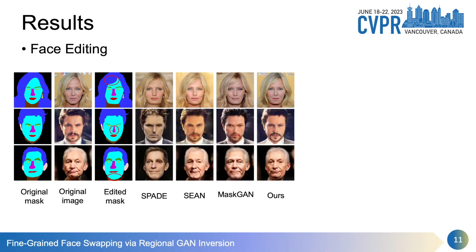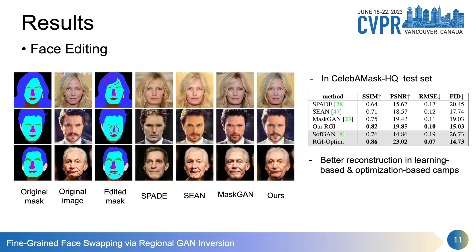Other than face swapping, our regional GAN inversion network can naturally support face editing. We make some modifications on hair, nose, and chin. Our results look more visually pleasant, and the details of other regions and the overall identity are well maintained. We also calculate reconstruction metrics such as SSIM, PSNR, RMSE, and FID, and these values are consistent with our qualitative comparison.